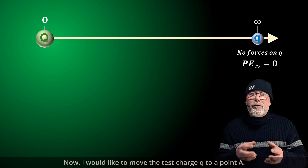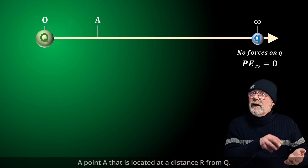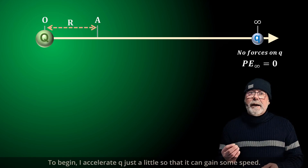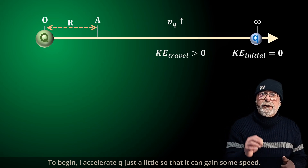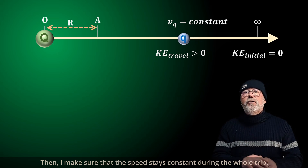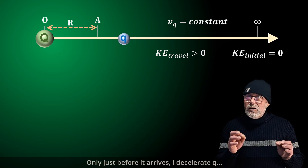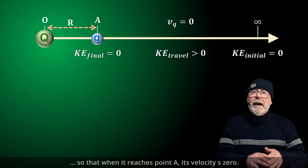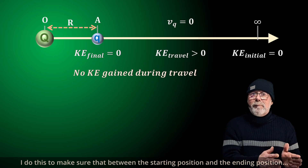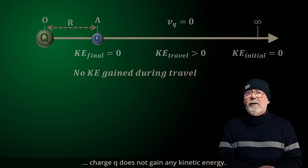I would like to move the test charge little q to a point A, located at a distance R from big Q — therefore, inside the electric field. I accelerate little q just a little so that it can gain some speed, then make sure the speed stays constant during the whole trip. Only just before it arrives, I decelerate little q so that when it reaches point A, its velocity is zero. I do this to make sure that between the starting position and the ending position, charge little q does not gain any kinetic energy.